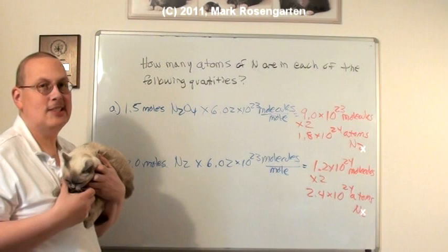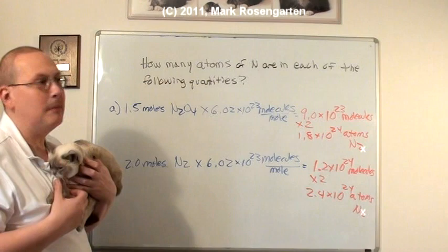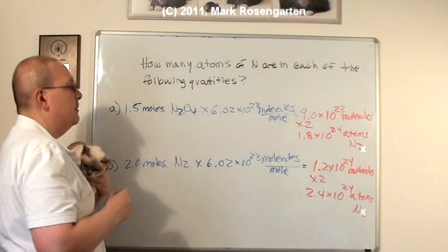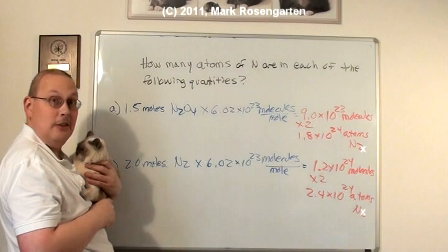You take the number of molecules, multiply it by how many atoms of that element there are in the molecule. If we wanted to do oxygen to find out how many atoms of oxygen there were, we just simply take the number of molecules and multiply it by 4 atoms of oxygen in the formula. You see how it works?